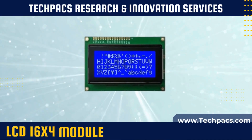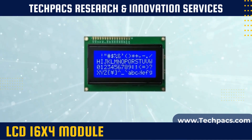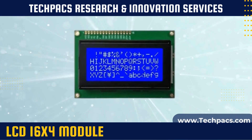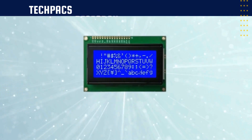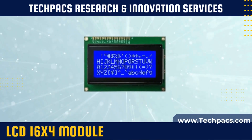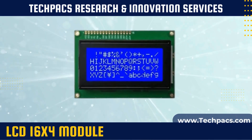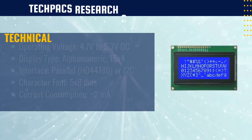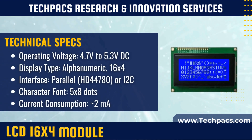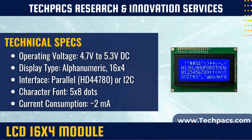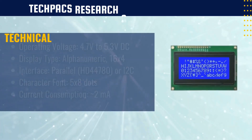The LCD 16x4 module is a versatile display unit capable of displaying alphanumeric characters across 16 columns and 4 rows. With additional display real estate compared to the 16x2 model, this module is suitable for applications requiring more complex information to be presented to the user.